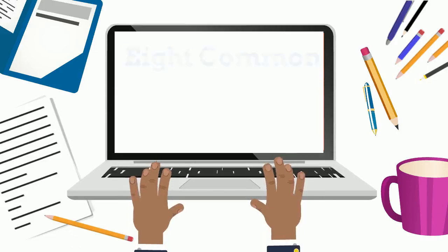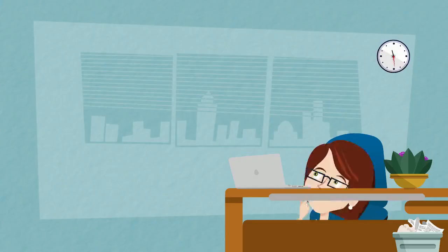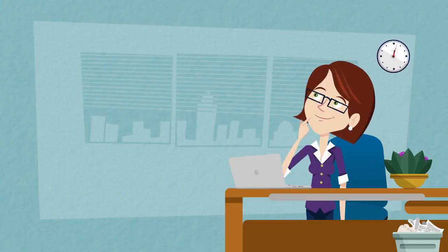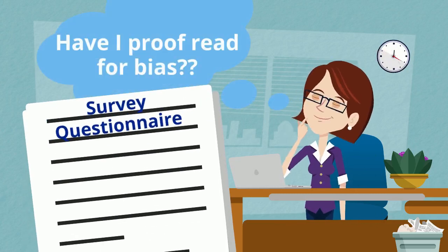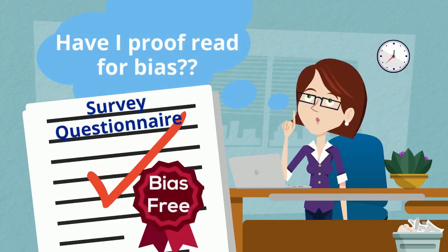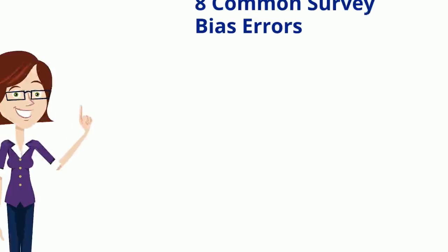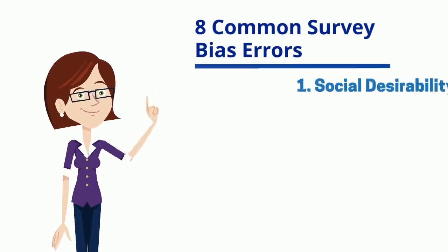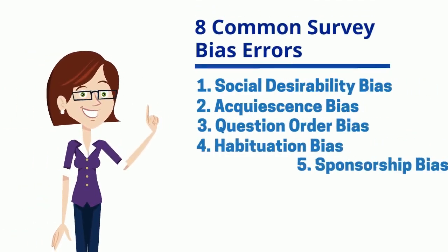Eight Common Survey Bias Errors. The primary goal of research is to minimize bias, if not entirely eliminate it. In so doing, results can be trusted as an honest reflection of the attitudes and behaviors of the total target population. Following are the eight most common survey biases you will encounter in data collection.